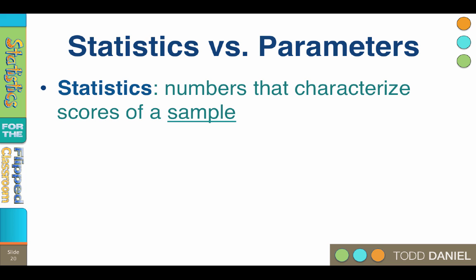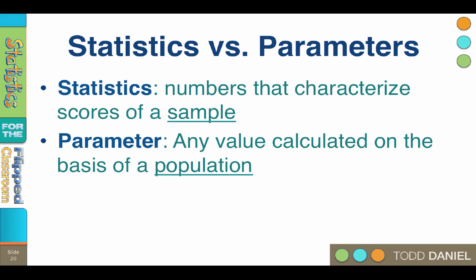If we were to measure the entire population, calculate their mean and standard deviation, then we would call those numbers parameters. Parameters are numbers that characterize data from a population.